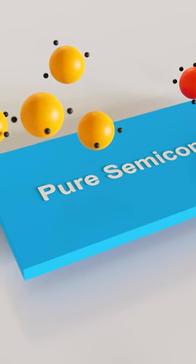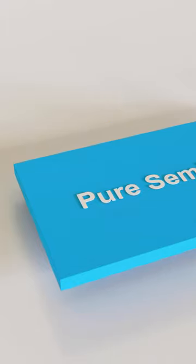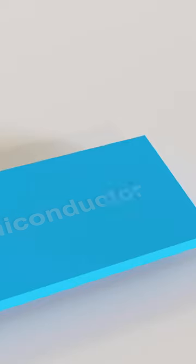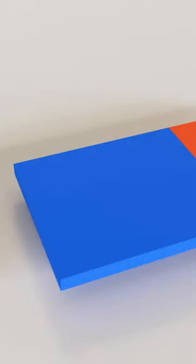To construct a diode, a single piece of pure semiconductor is half doped with trivalent impurities and another half is doped with pentavalent impurities. Due to this, half of the material becomes an N-type semiconductor and another half becomes a P-type semiconductor.